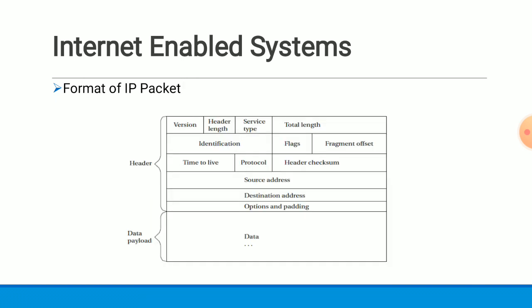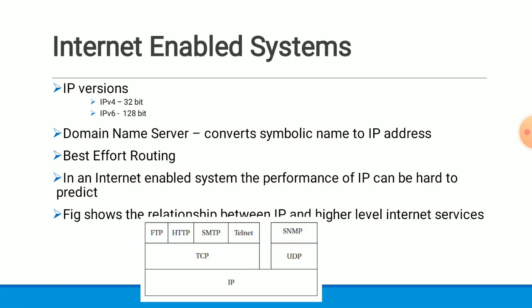This figure shows the format of an IP packet, which has been covered in computer networks. There are two main versions of IP: IPv4 with a 32-bit address and IPv6 with a 128-bit address. These addresses are used to uniquely identify a device in a network. IPv4 addresses are represented in dotted decimal notation and IPv6 addresses in hexadecimal notation.